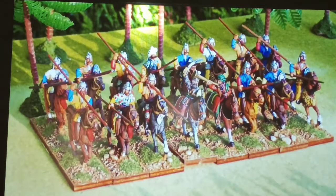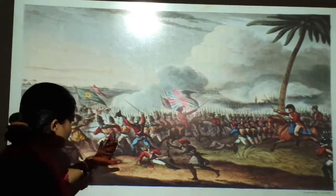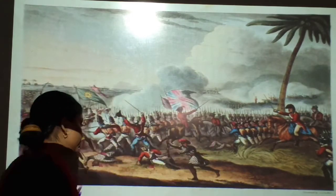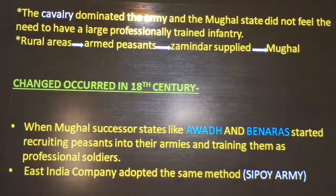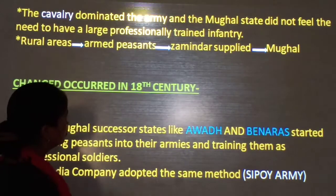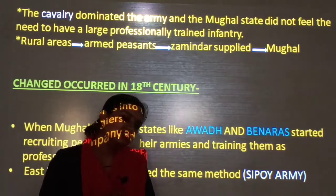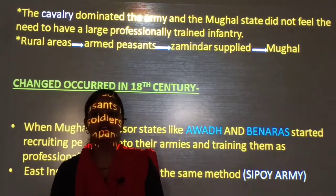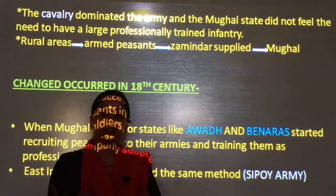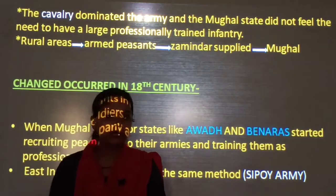Here is the photo of the cavalry army and here is the photo of the infantry army. Infantry means 'pedal' — soldiers who walk on foot. Cavalry dominated the army, and the Mughal state did not feel the need to have a large, professionally trained infantry. The cavalry was considered more important and better trained.